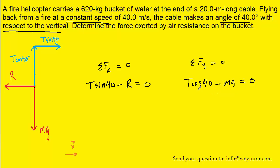Now we can proceed on to the y direction equation because we were given the mass of the bucket as being 620 kilograms. So we can fill that in. We can also fill in the gravitational constant g of 9.8. We can then use our calculators to simplify 620 times 9.8.